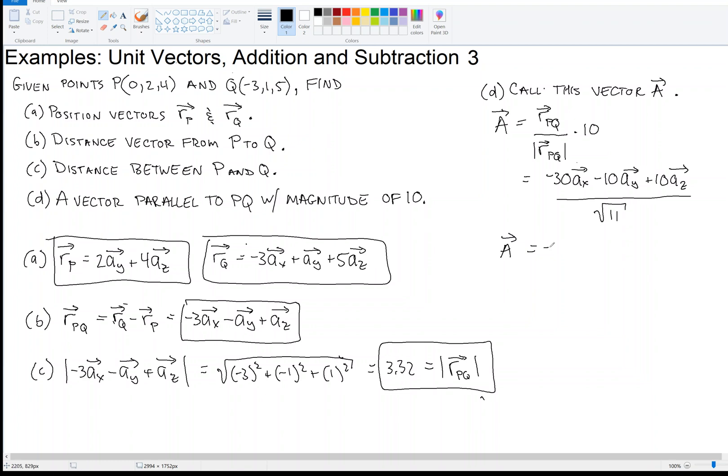Vector A to three significant digits is negative 9.05 in the X direction, minus 3.02 in the Y direction, and plus 3.02 in the Z direction. So that's our answer there.